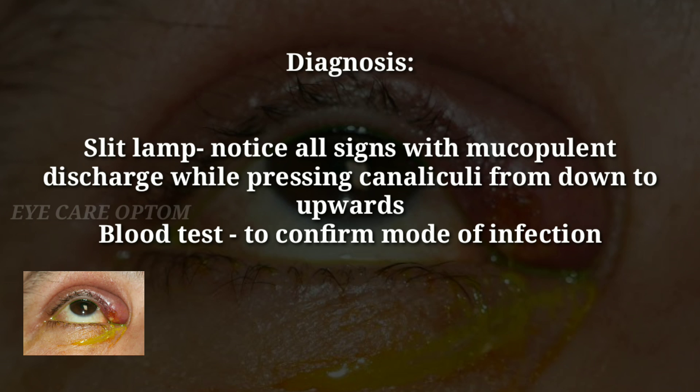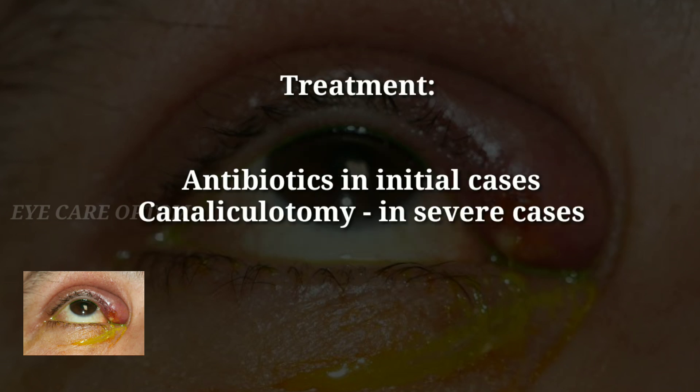Diagnosis on slit lamp: you can notice all the signs with mucopurulent discharge while pressing the canaliculus from downwards to upwards. Blood tests can be done to confirm the mode of infection. Treatment for canaliculitis: in initial cases, antibiotics can be prescribed; in severe cases, canaliculotomy can be performed.